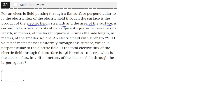A certain flat surface consists of two adjacent squares, where the side length in meters of the larger square is three times the side length in meters of the smaller square. An electric field with strength 29 volts per meter passes uniformly through this surface, which is perpendicular to the electric field. If the total electric flux of the electric field through the surface is 4,640 volt meters, what is the electric flux in volt meters of the electric field through the larger square?